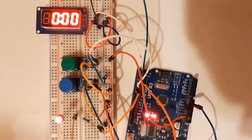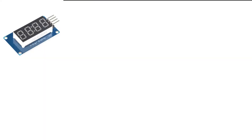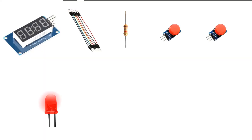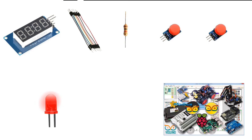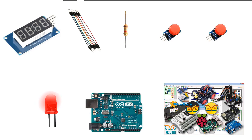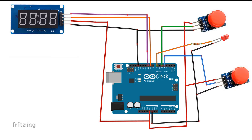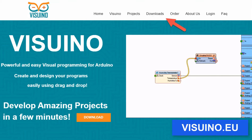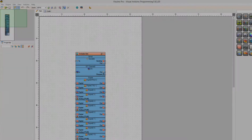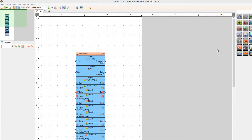For this project you will need: a LED display TM1637, jumper wires, a 1 kilo-ohm resistor, 2 button modules, 1 LED, Arduino, and Viswino software. Wire everything according to the schematic, then go to Viswino.eu and download and install Viswino software.